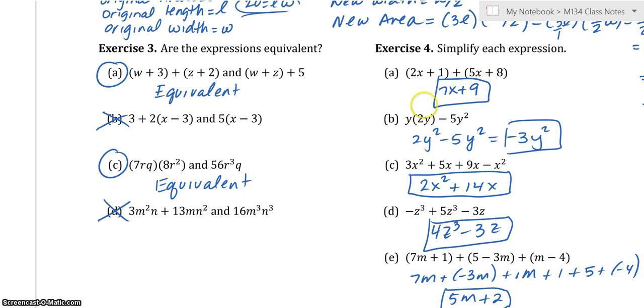This one, what I did is I multiplied first and got 2Y squared. Then 2Y squared minus 5Y squared is the same as 2Y squared plus negative 5Y squared. So that would be negative 3Y squared.